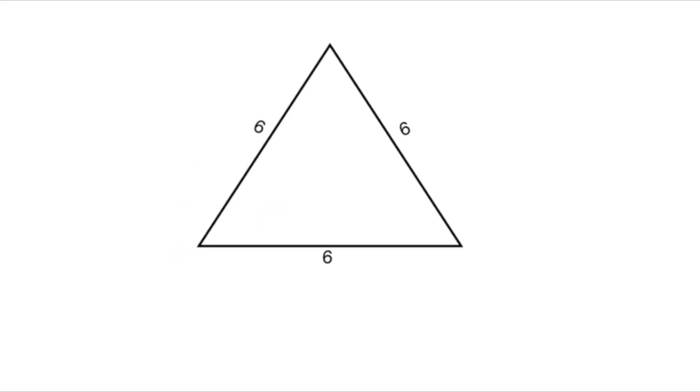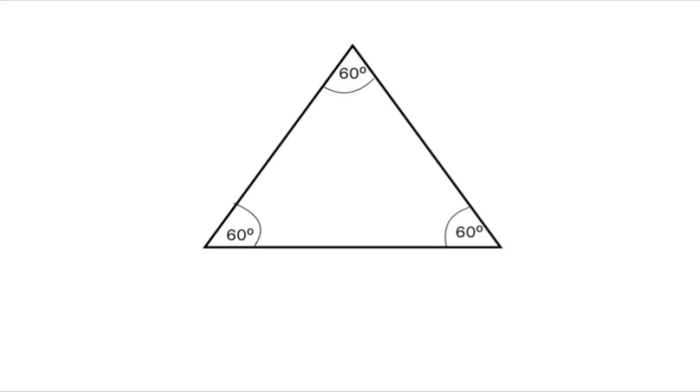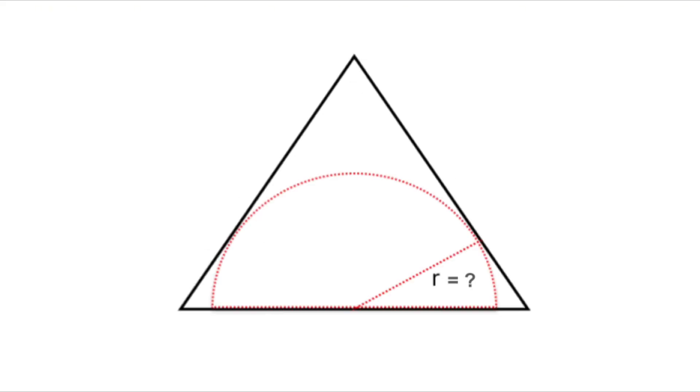All right, quick check-in. Since it's an equilateral triangle, that tells us a couple of really helpful things right away. All the sides are six units, and all the angles are 60 degrees. Beautiful symmetry, right? That kind of balance is exactly why these problems are possible. Everything lines up so nicely. But here's the big question we still need to answer. How do we find the radius of that semicircle just from this?